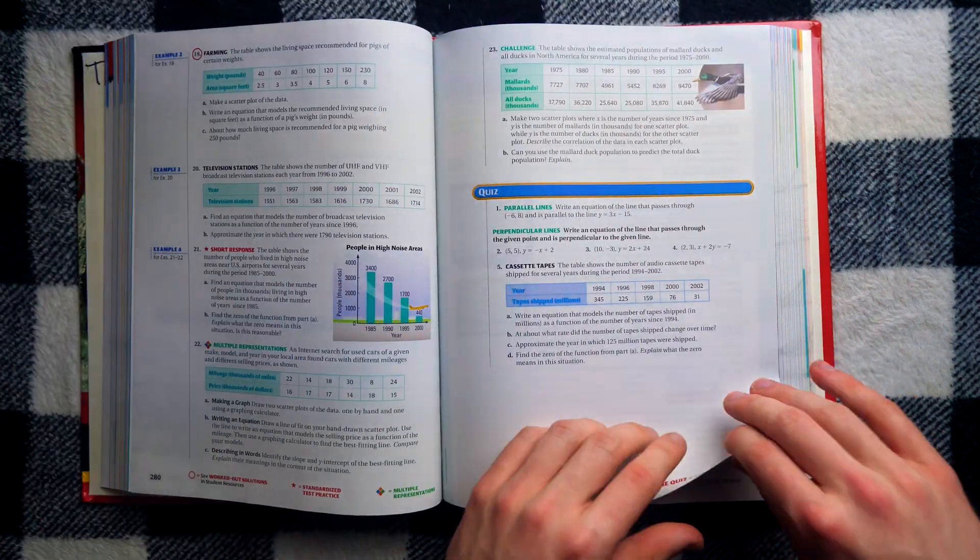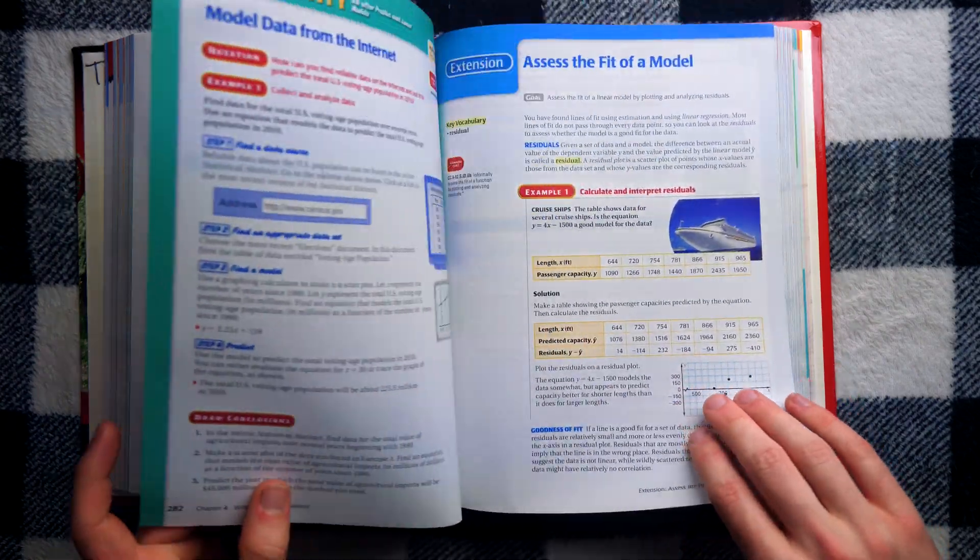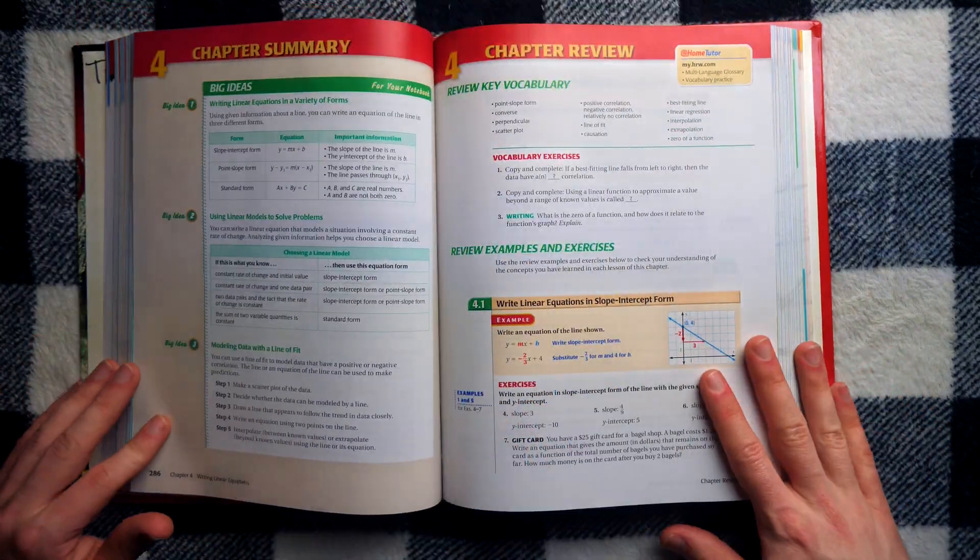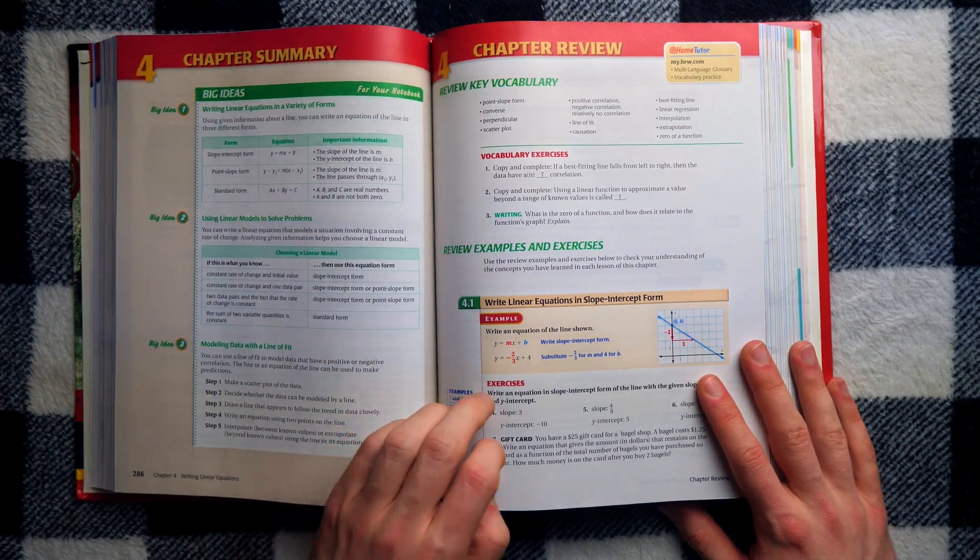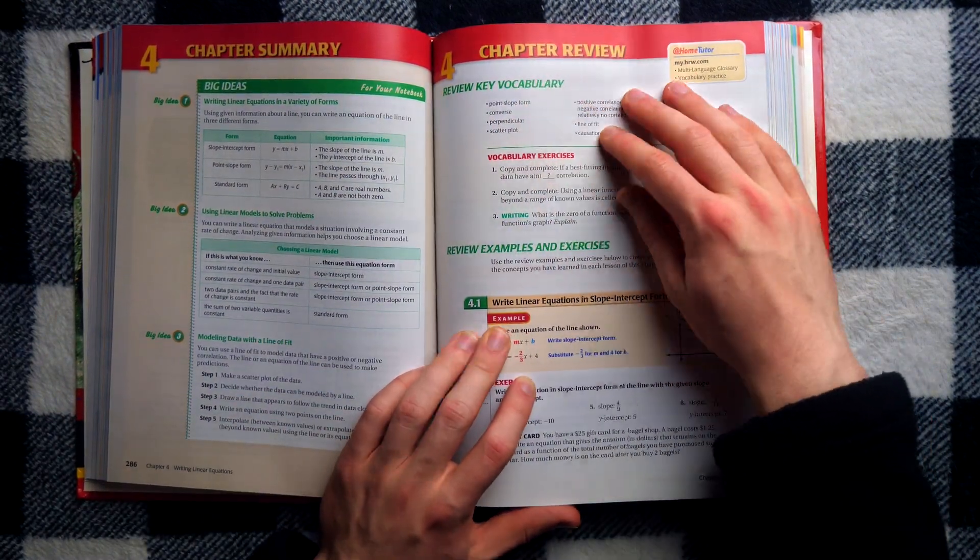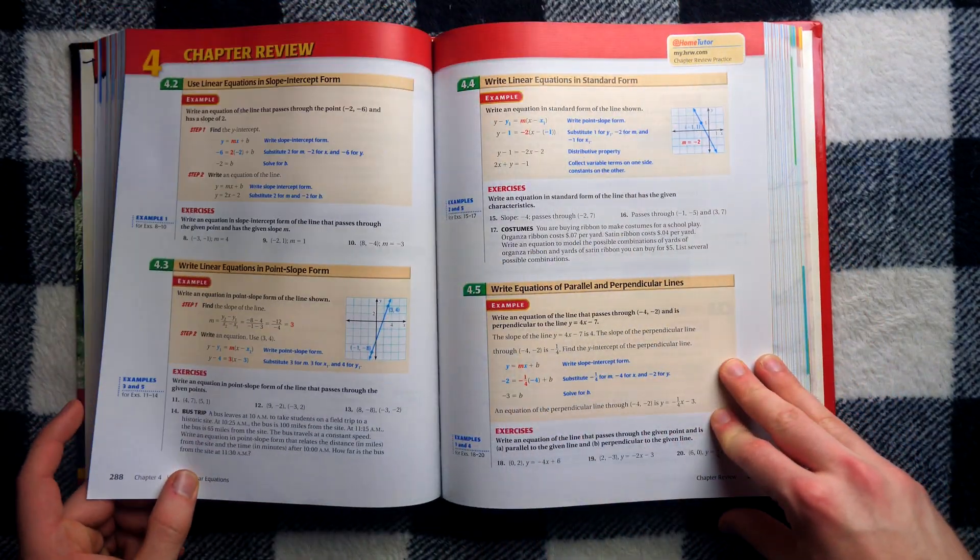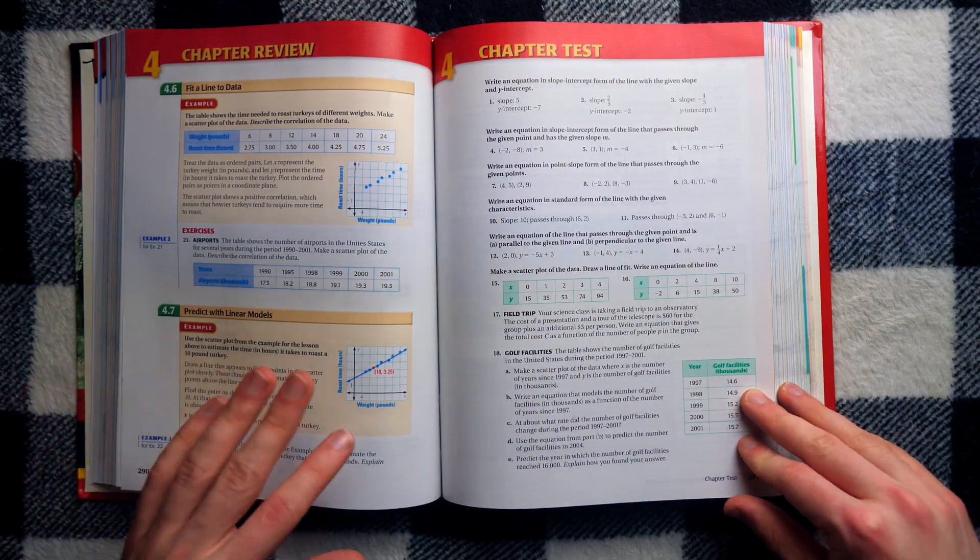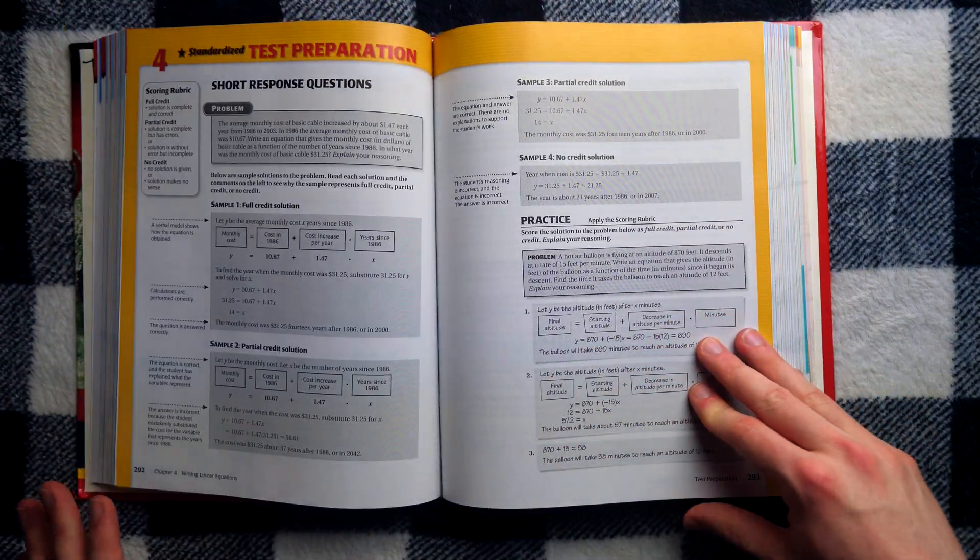When you get to the end of any chapter, like here's chapter four, you get to the end of this bad boy, and what happens? You get a chapter summary with big ideas. You get chapter review with vocab, and then you get review examples and exercises, and then they hit you with the chapter test. Chapter test.